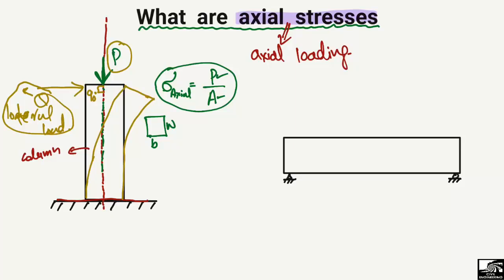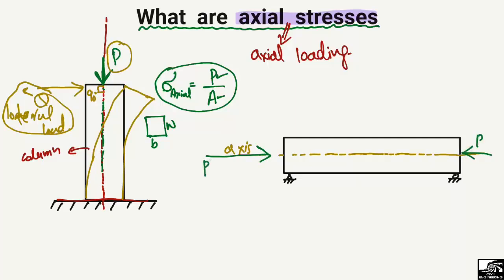Similarly, consider a beam with a longitudinal axis. If a load acts along the axis of the beam — either a compression load or a tension load, for example load P acting along the axis — the stresses created due to this load are known as axial stresses. The formula is again: axial stress equals load P divided by area A, where A is the cross-sectional area of the beam, for example breadth times width.